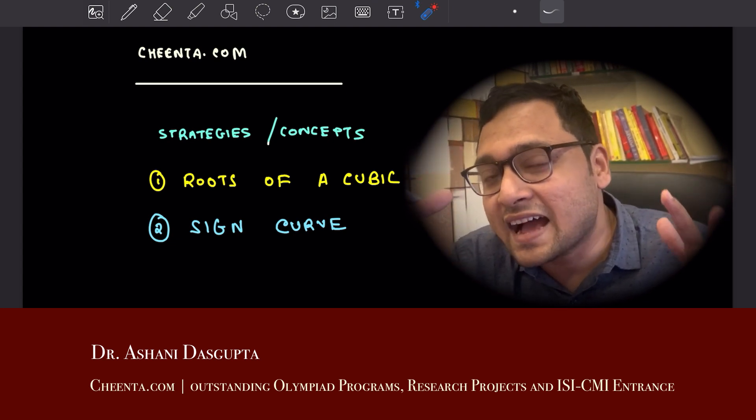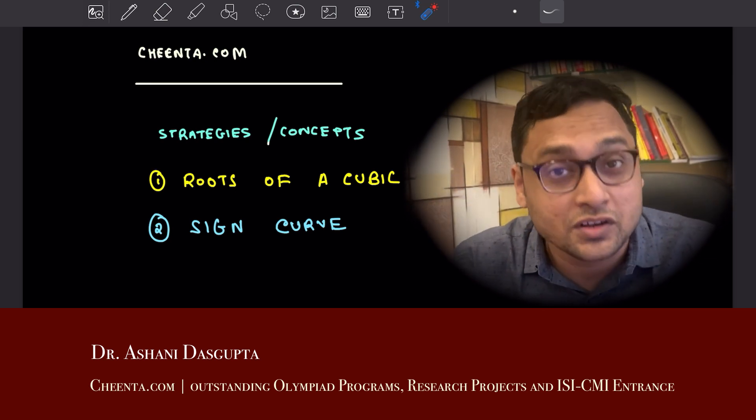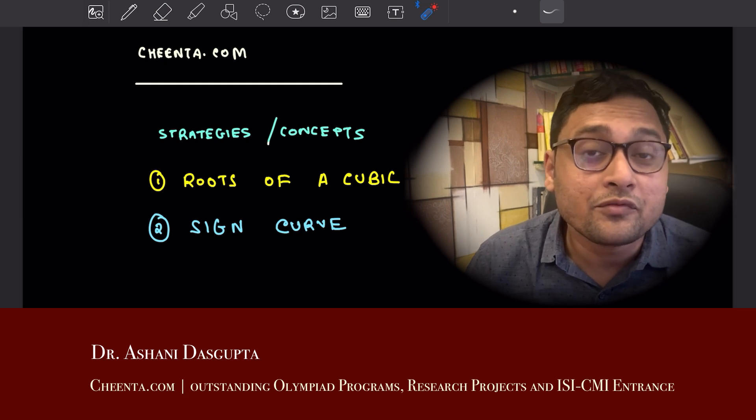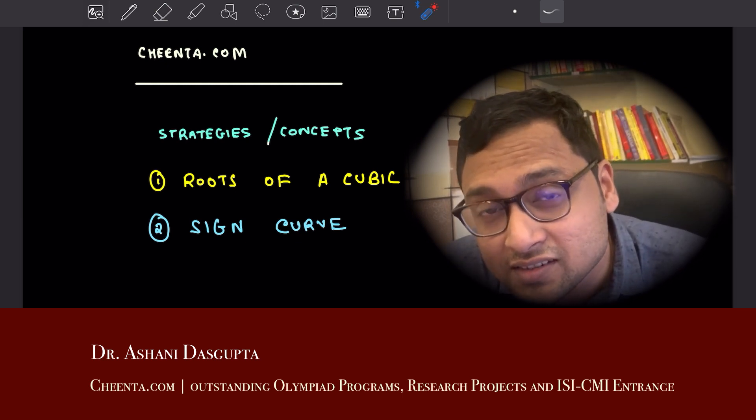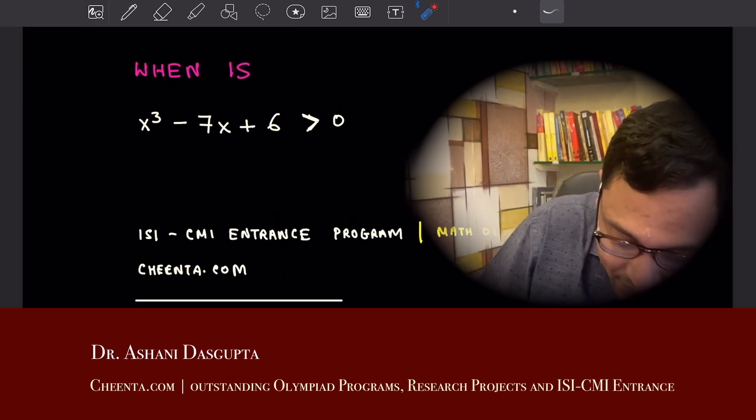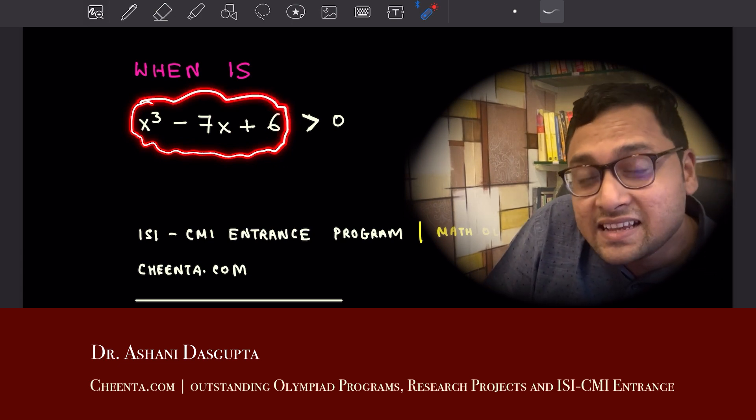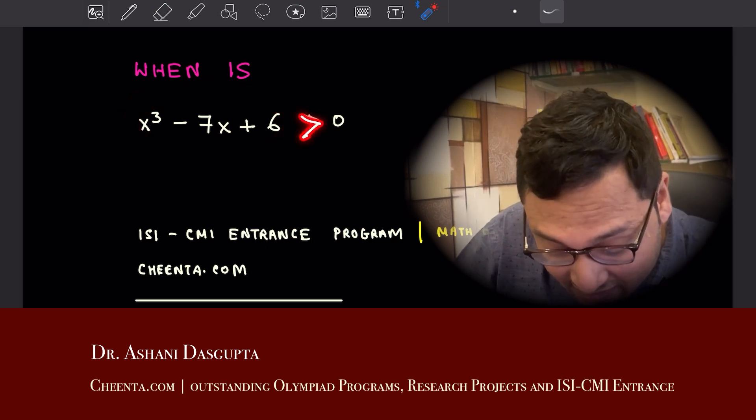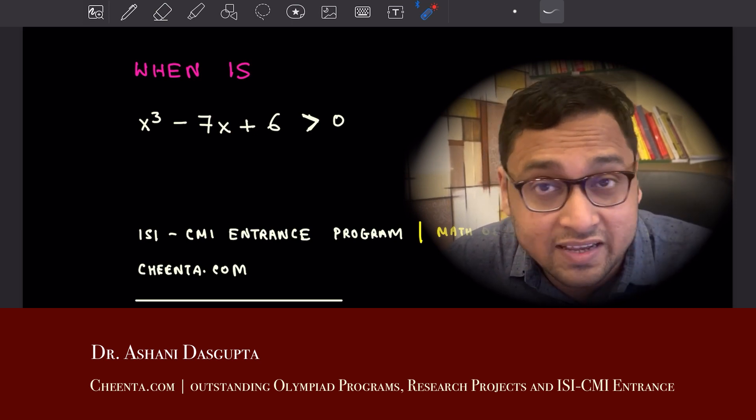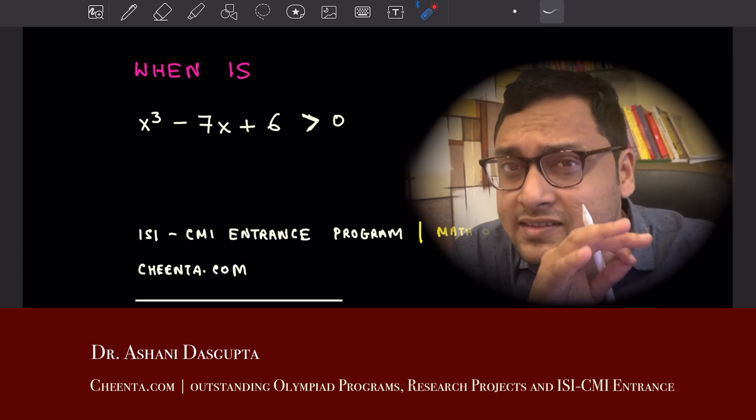We will talk about these two concepts using a problem from the ISI B-stat B-math entrance. It's a very simple problem. If you have the expression x cube minus 7x plus 6, when is this expression greater than 0? When is it positive? This is what the question is. It's a very simple problem once you know the conceptual details.